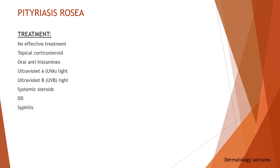Severe cases may be treated with UVA, ultraviolet A light, UVB light, or systemic corticosteroids. Spontaneous resolution occurs within 6 to 8 weeks. During this time, new lesions continue to appear while others progressively fade. Less than 3% of patients suffer recurrences. Patients thought to have pityriasis rosea should be screened for syphilis because these two eruptions often have a similar appearance.